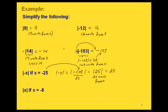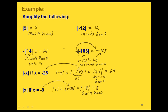One thing to notice is that absolute value bars act as a grouping symbol, just like parentheses or fraction bars. If we have more complicated problems, we work inside the absolute value bars first as part of our order of operations. For the next example, we replace x with negative 8, giving us the absolute value of negative 8. Negative 8 is 8 units from 0, so the value of this expression is just 8.